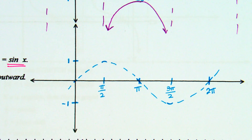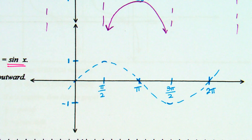After you graph sine, what do we have to do? Draw the asymptotes. And how do I draw asymptotes? Wherever my graph crosses the x-axis — so at our zeros — we're going to draw asymptotes.